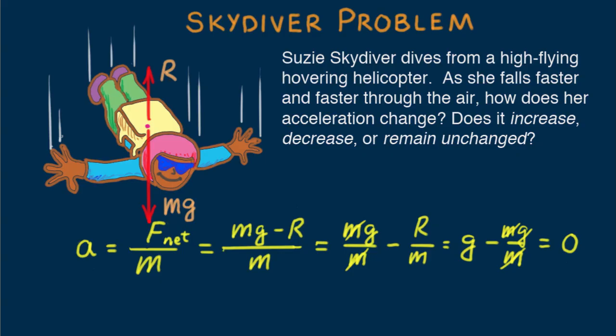With zero acceleration, does this mean her falling velocity is zero? No, no, no. It's her acceleration that's zero, not her velocity.